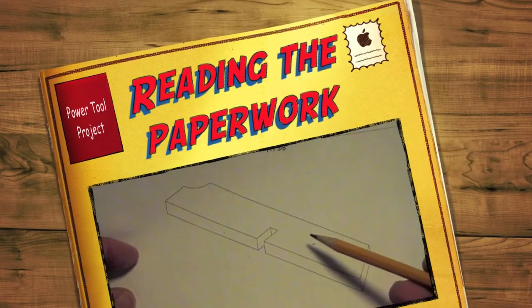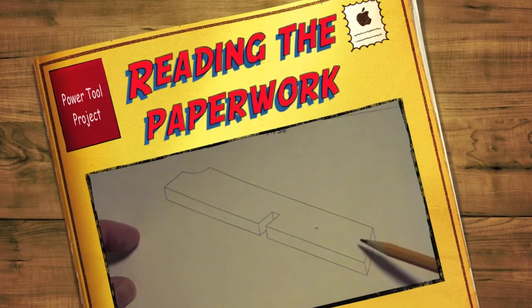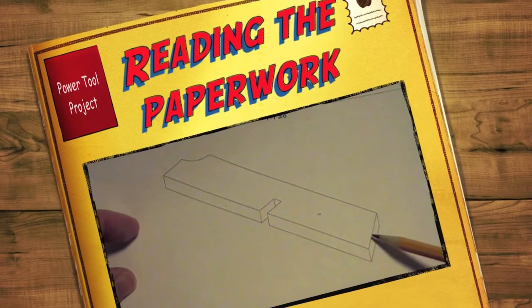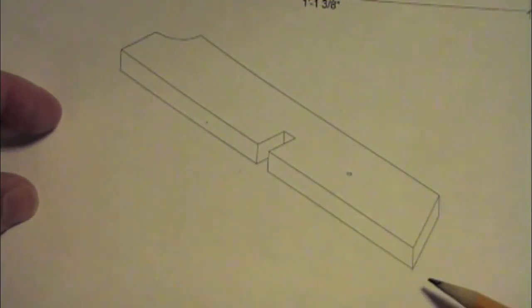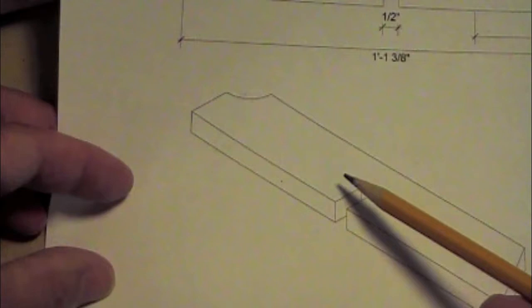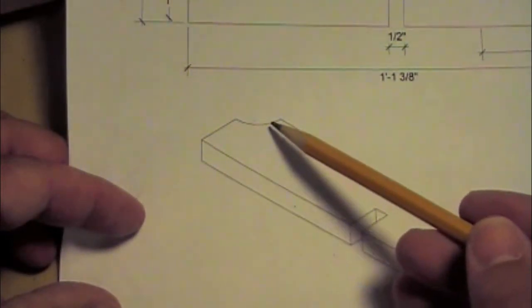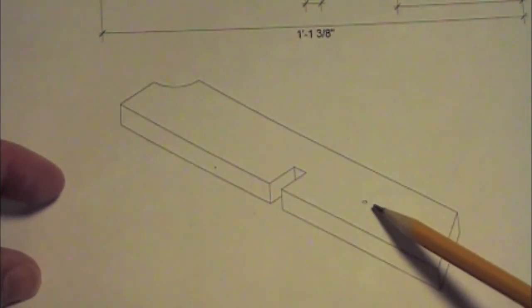So our piece of wood is ultimately supposed to look like this. There's an isometric view. There's an angled cut off there. There's a slot here. There's a curved corner cut out here. And there's a hole there.